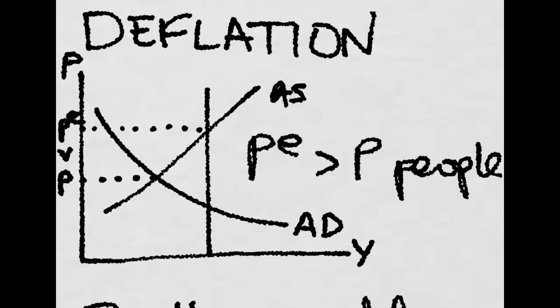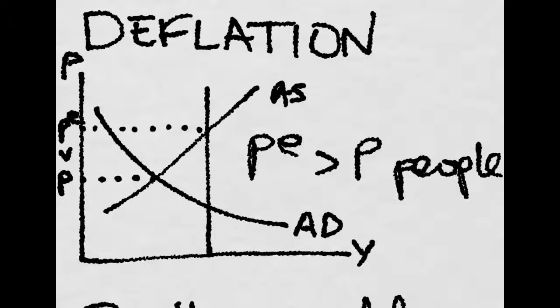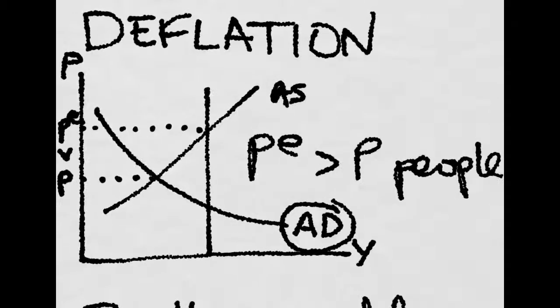So when this happens, this means that people were wrong in their expectations. Thus, they will lower those expectations about prices.